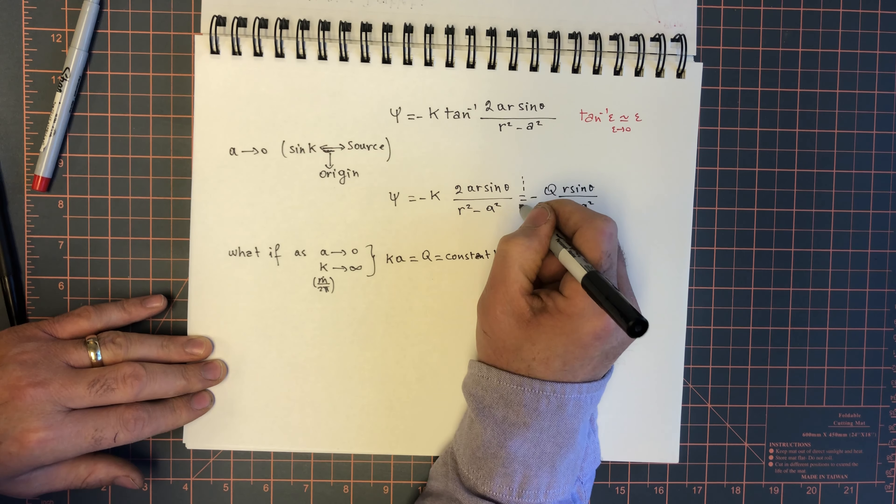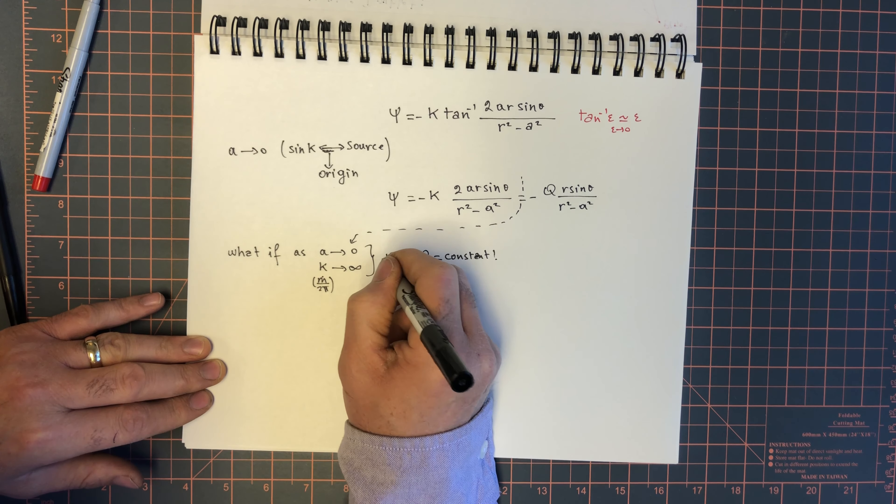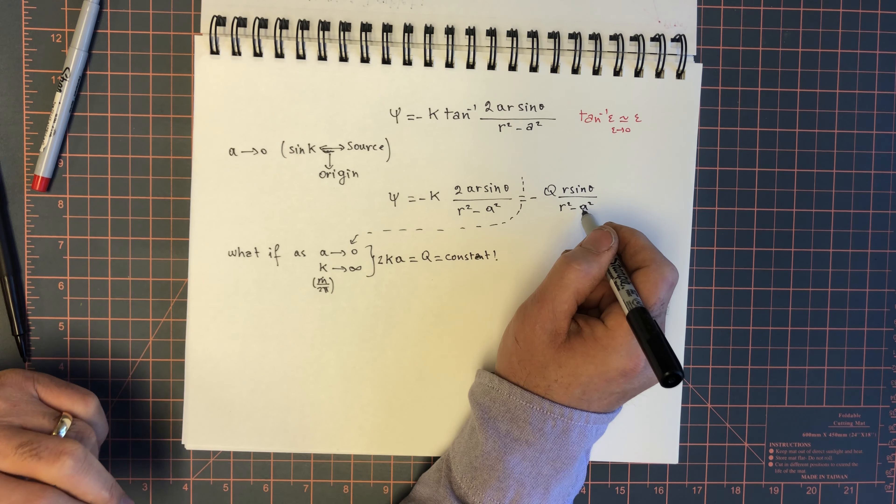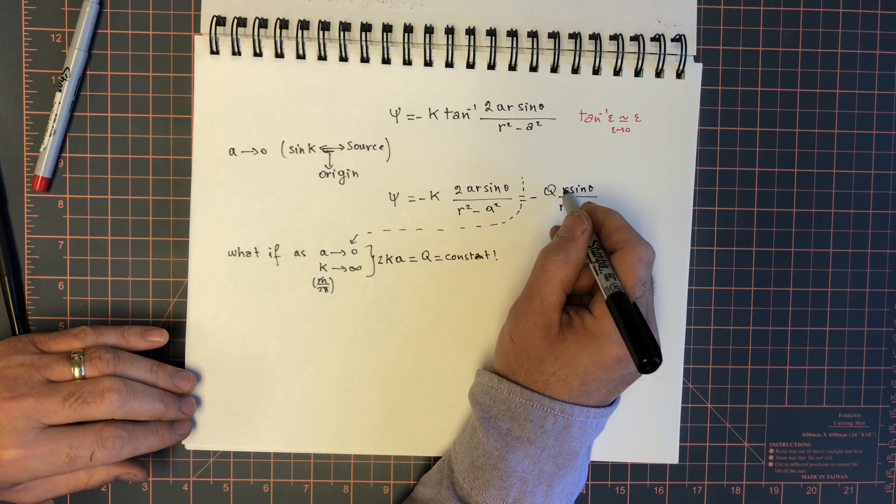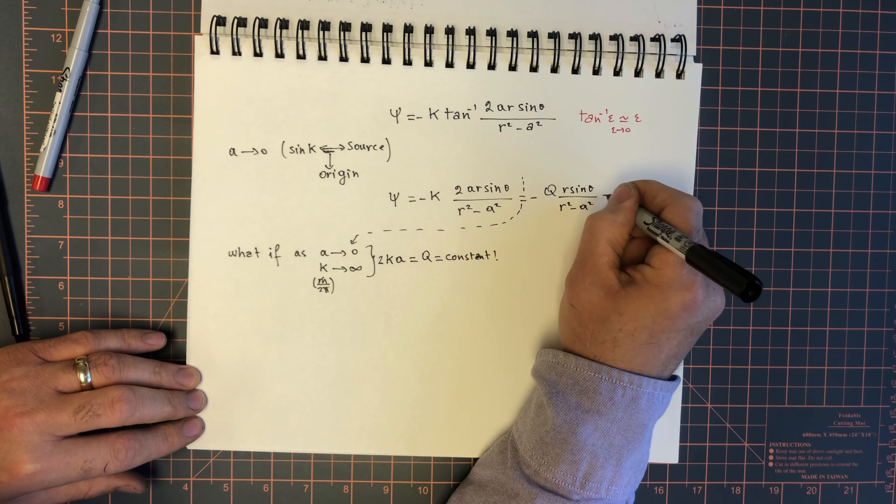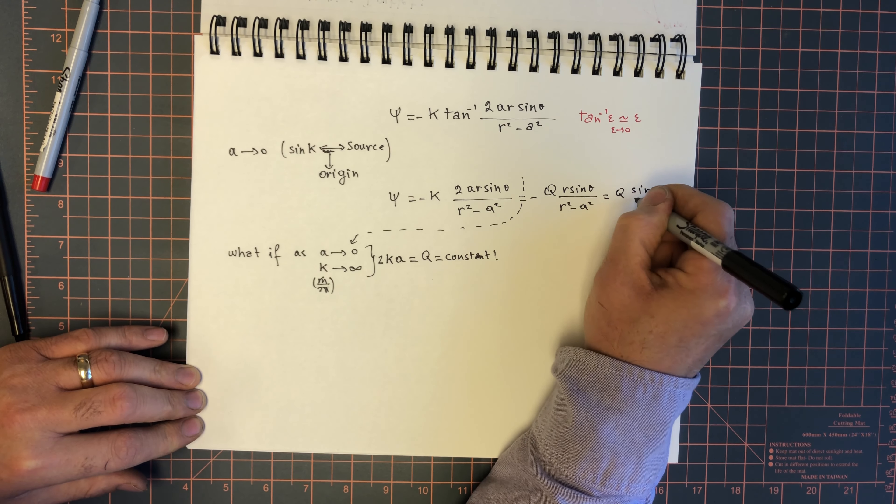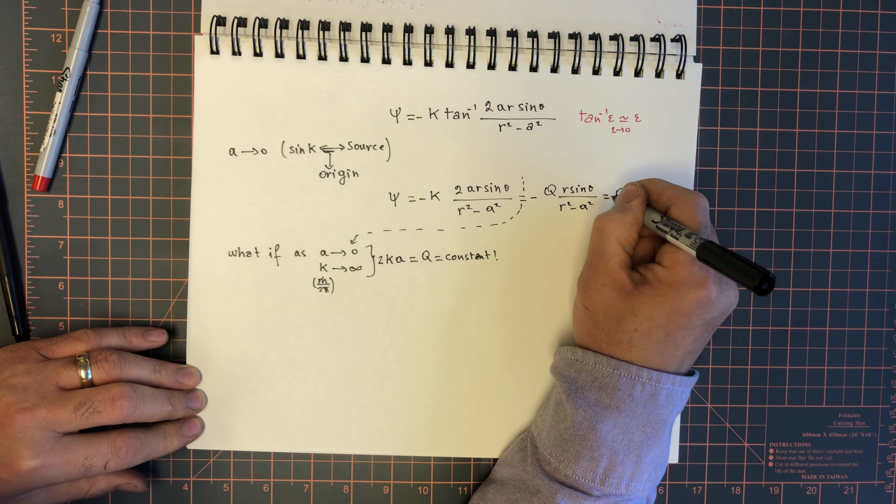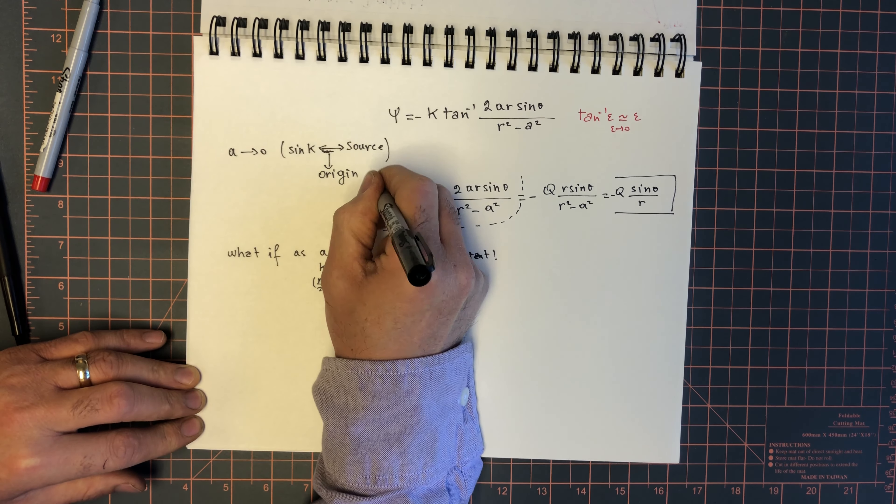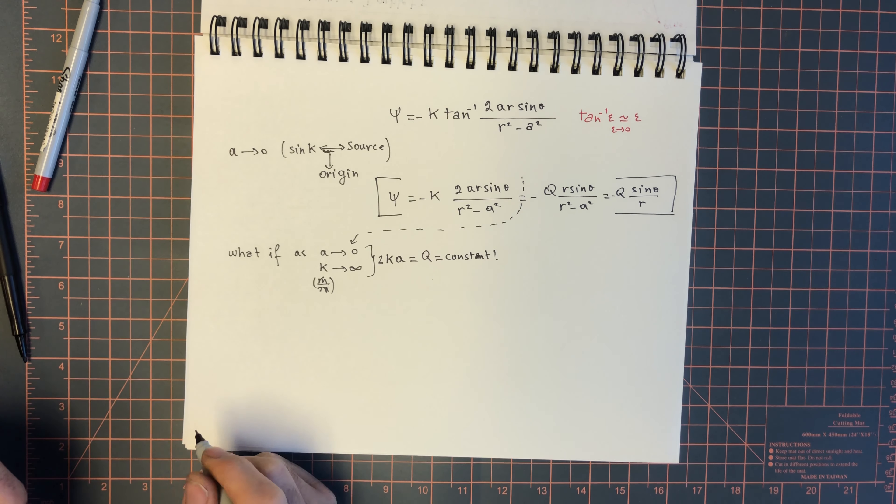Looking at this analysis, 2 kA is q. And now, as a approaches 0, r over r squared minus a squared becomes 1 over r. So, you get minus q sine theta over r, which is a non-zero flow. This is pretty cool, and this is called a doublet.